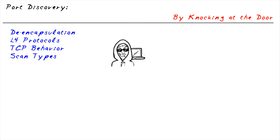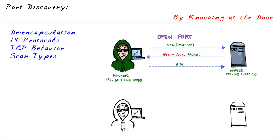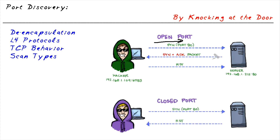In port discovery, we can use the behavior of TCP and other protocols simply to knock on the door. If an attacker wants to discover if port 80 is open, they could send a TCP SYN request on port 80. If we get a SYN-ACK back, we know that service — specifically that port — is open, likely indicating HTTP services on the well-known port 80. The hacker, instead of following up with an acknowledgement, could send a TCP segment with a RST flag set to tell the server never mind. This way, the hacker can scan ports very quickly without tying up a lot of resources.